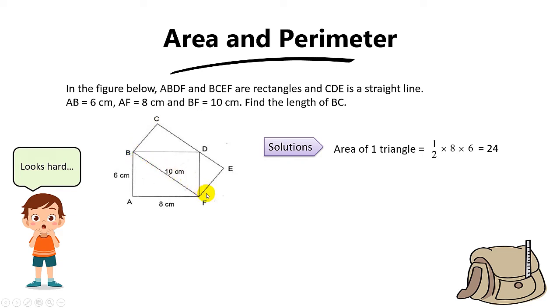And now take a look at this rectangle over here. What is the area of this rectangle? The answer is 48. That's because this triangle over here is exactly half of the area of the rectangle.